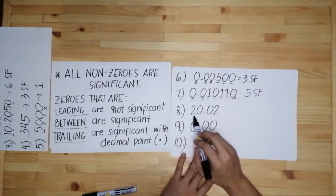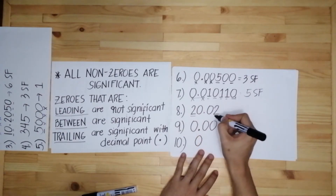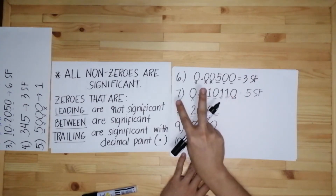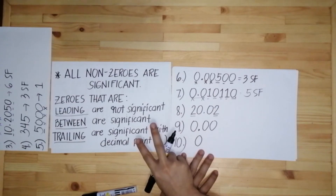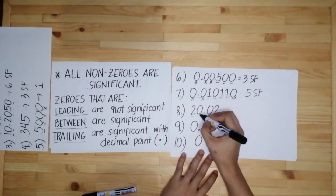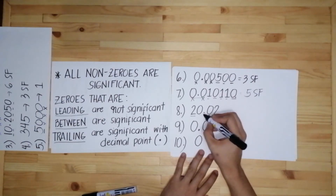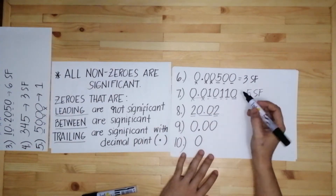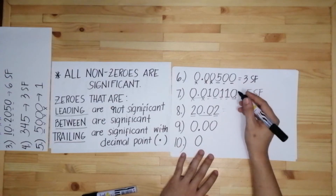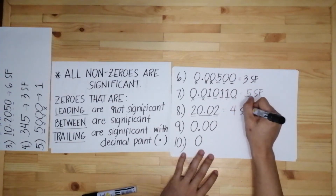Number eight, we have 20.02. We have two non-zero numbers, so we already have two significant figures. Then these two zeros are considered 'between' — zeros between two non-zero numbers — so they are counted as significant automatically. All in all, they are all considered significant figures — four significant figures total.